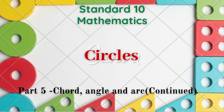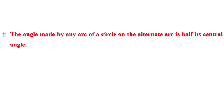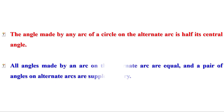Welcome to Maths Companion. Let us recall what we have learned in the last video. The angle made by any arc of a circle on the alternate arc is half its central angle. All angles made by an arc on the alternate arc are equal, and a pair of angles on alternate arcs are supplementary.